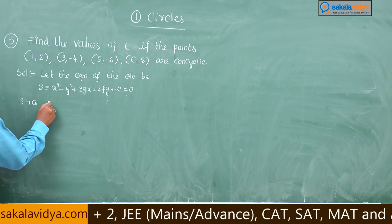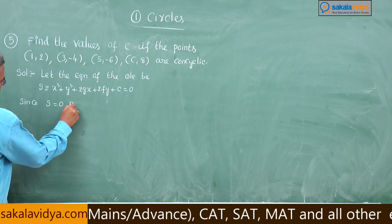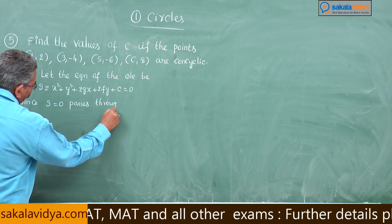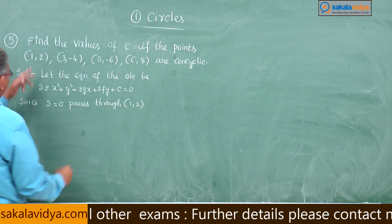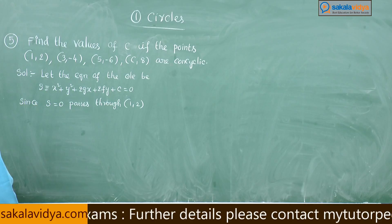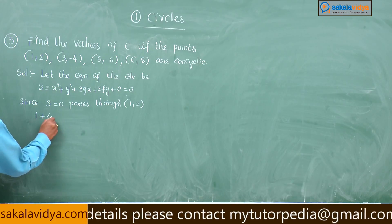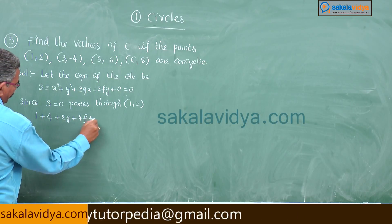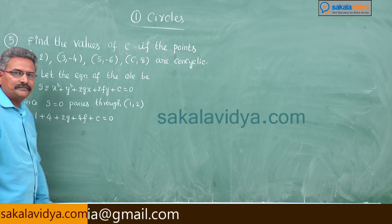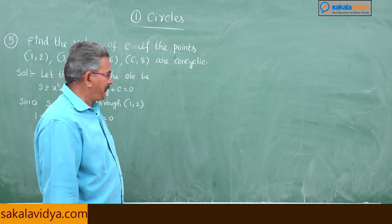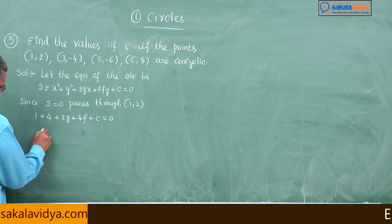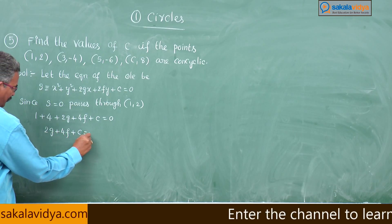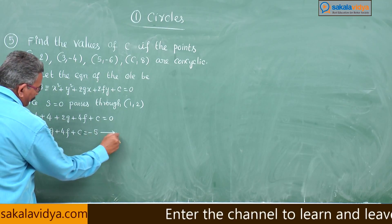Since S = 0 passes through the first point (1, 2): 1 + 4 + 2g + 4f + c = 0, giving 2g + 4f + c = −5. Call this Equation 1.